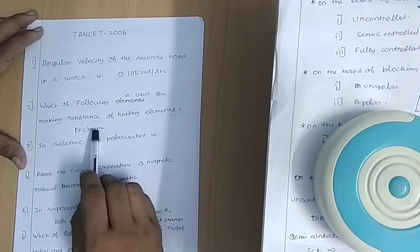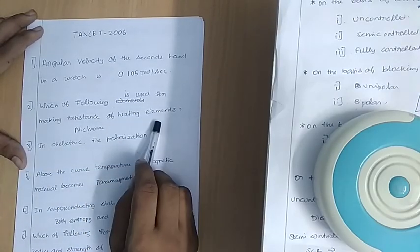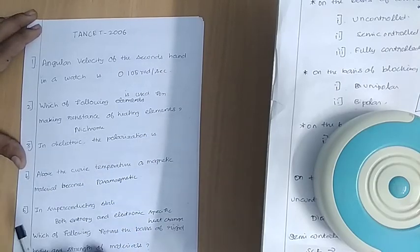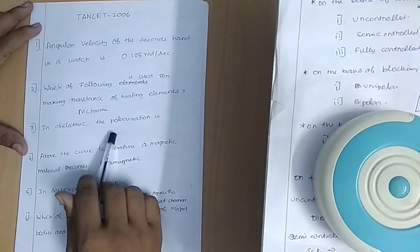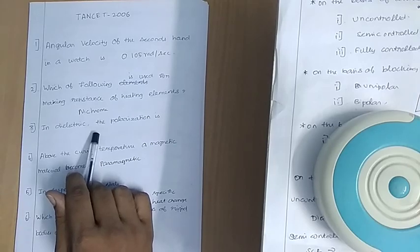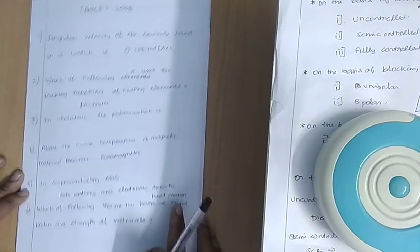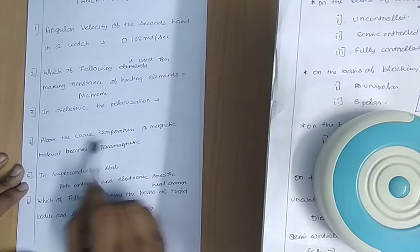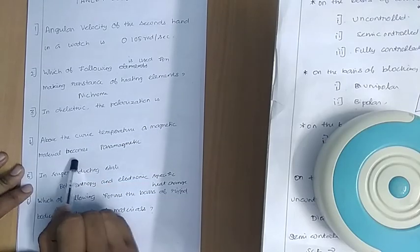For making resistance of heating elements, the answer will be commented later. Next: the temperature above which a magnetic material becomes paramagnetic.